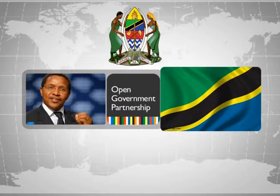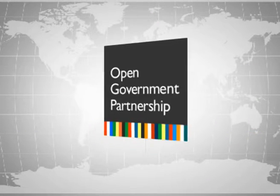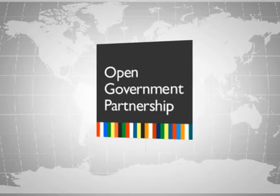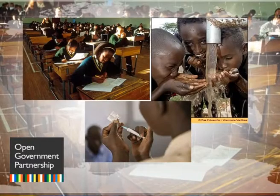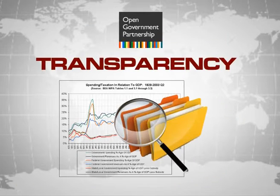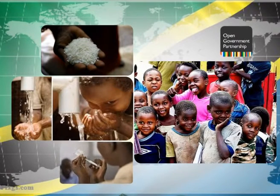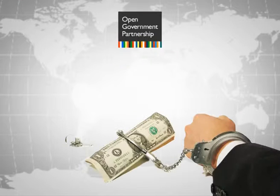Tanzania's journey at the Open Government Partnership (OGP) started in 2011 with the personal commitment of His Excellency President Jakaya Kikwete and the eventual commitment of Tanzania as partners of the OGP. The objective of the OGP is to make government business more open to its citizens in the interest of improving public service delivery, government responsiveness, and combating corruption.